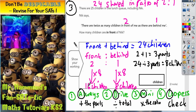This means that there are 16 children in front of Nick and there are eight children behind him. The question asks how many children are in front of Nick, and the final answer is 16.